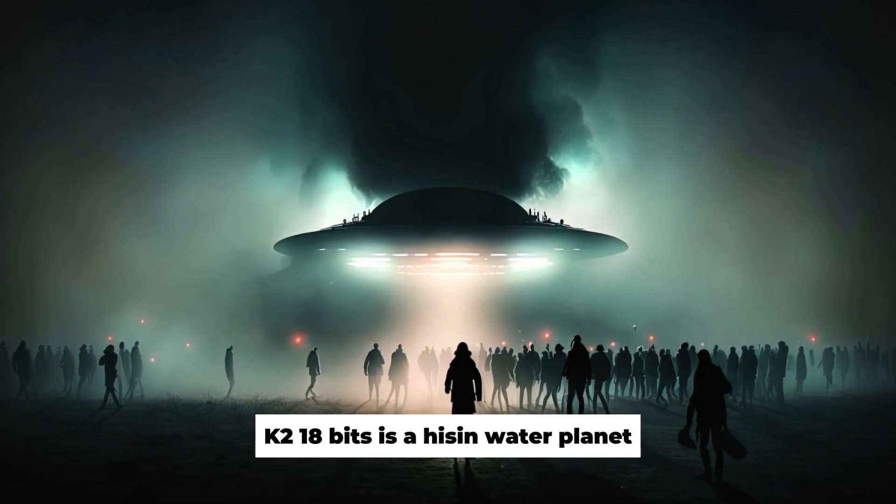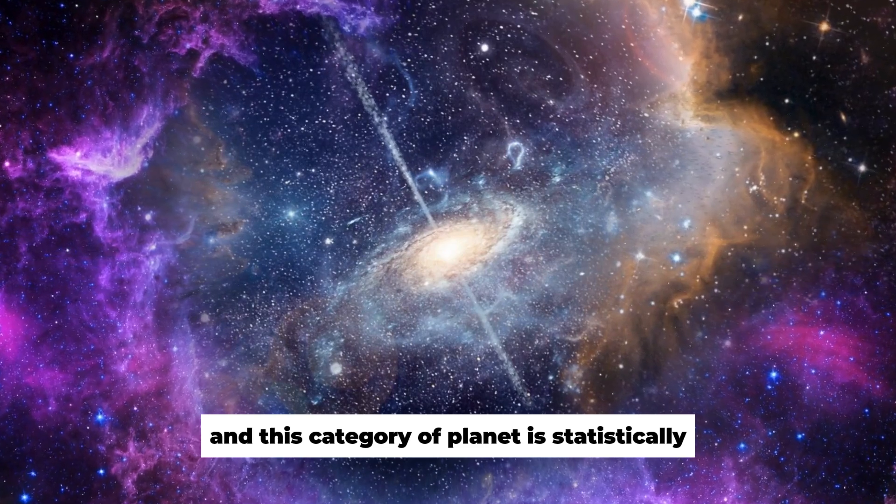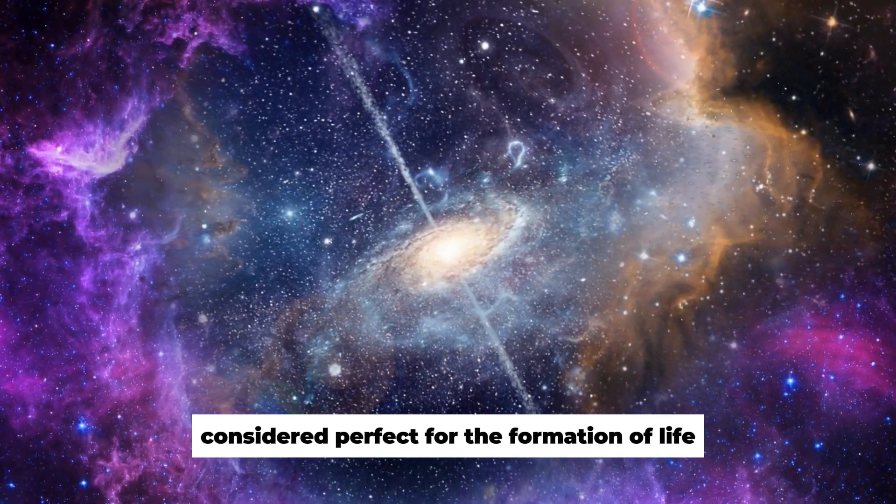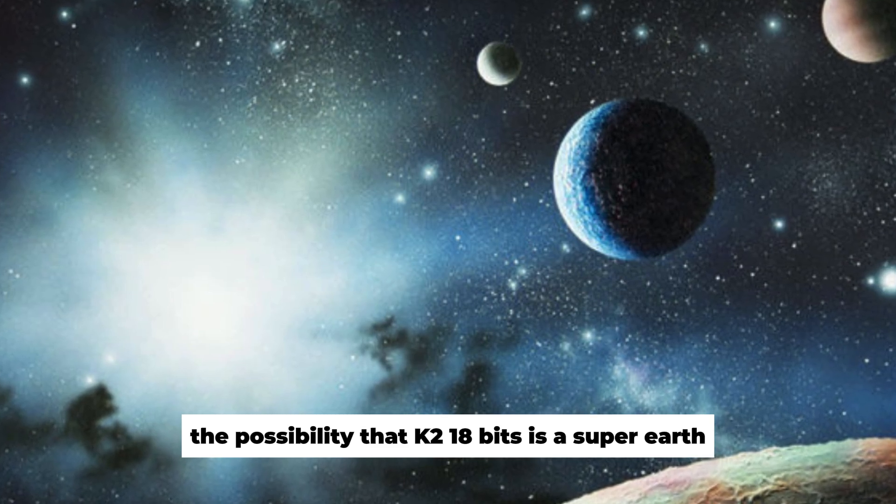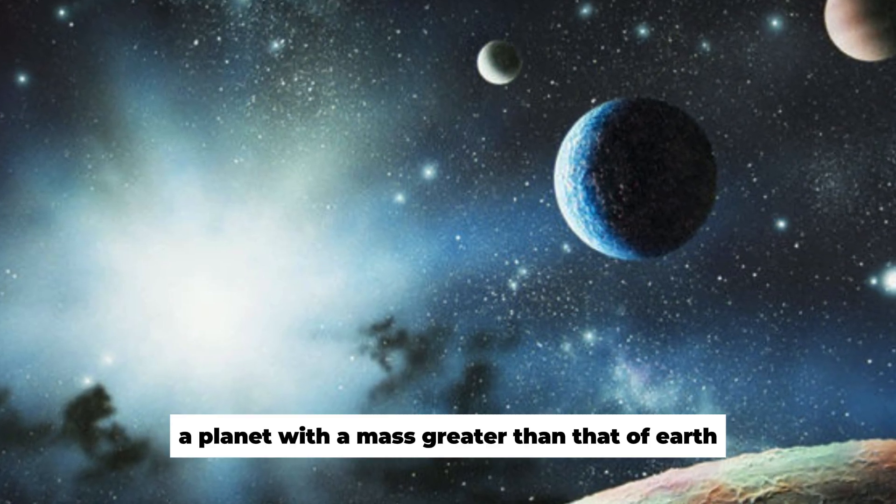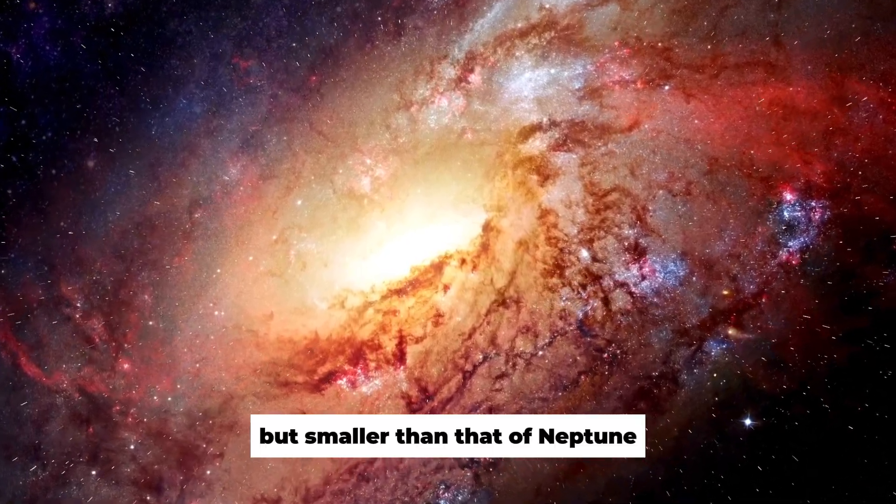K2-18b is a Hycean water planet, and this category of planet is statistically considered perfect for the formation of life. The possibility that K2-18b is a super-Earth, or in other words, a planet with a mass greater than that of Earth but smaller than that of Neptune, makes it particularly interesting.